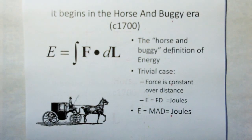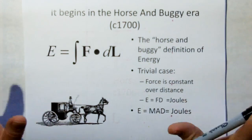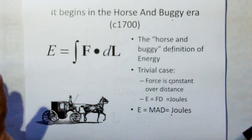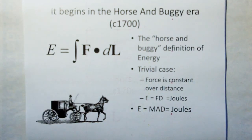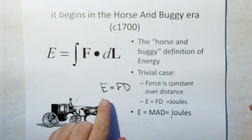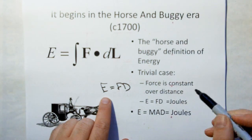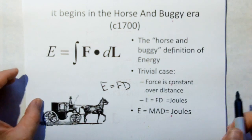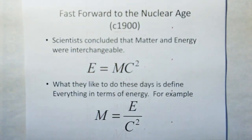So this problem begins in the horse and buggy era, circa 1700. There was the original definition of energy, which follows this integral here. But we're going to do the trivial case where the force is constant over the distance of travel and the direction of the force and the distance are parallel. That way, we can use a trivial definition of energy which is valid in this context, which is simply energy equals force times distance. Energy, force times distance is the units of joules. And if we take force and substitute force with mass times acceleration, that's equal to joules as well. So we're going to use the MAD definition of energy, which is essentially the normal definition.